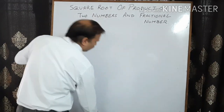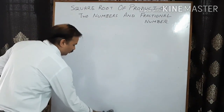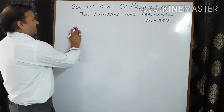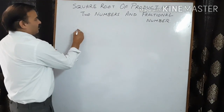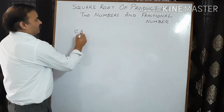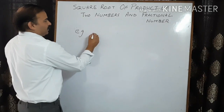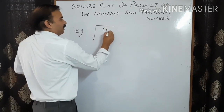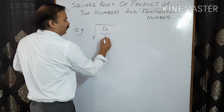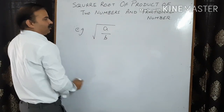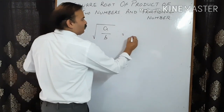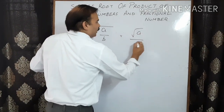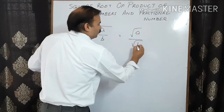For example, square root of a divided by b is equal to square root of a upon square root of b.